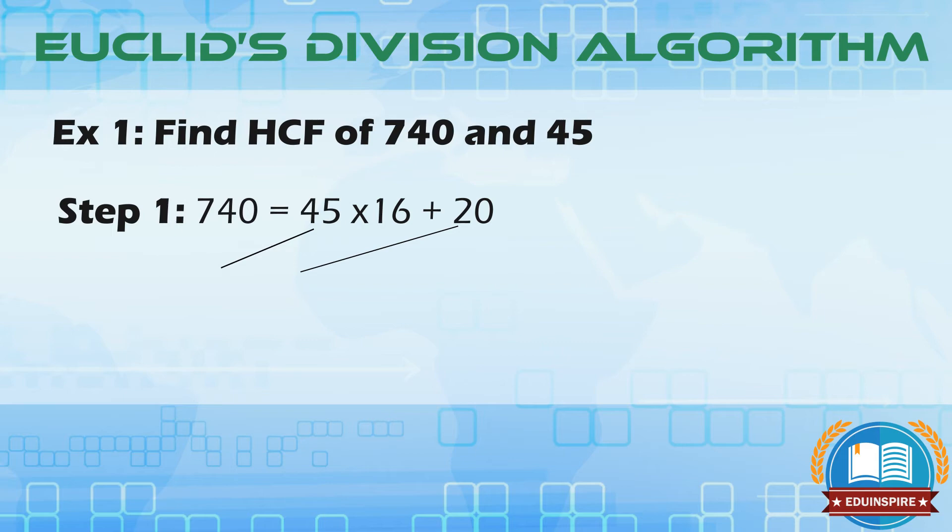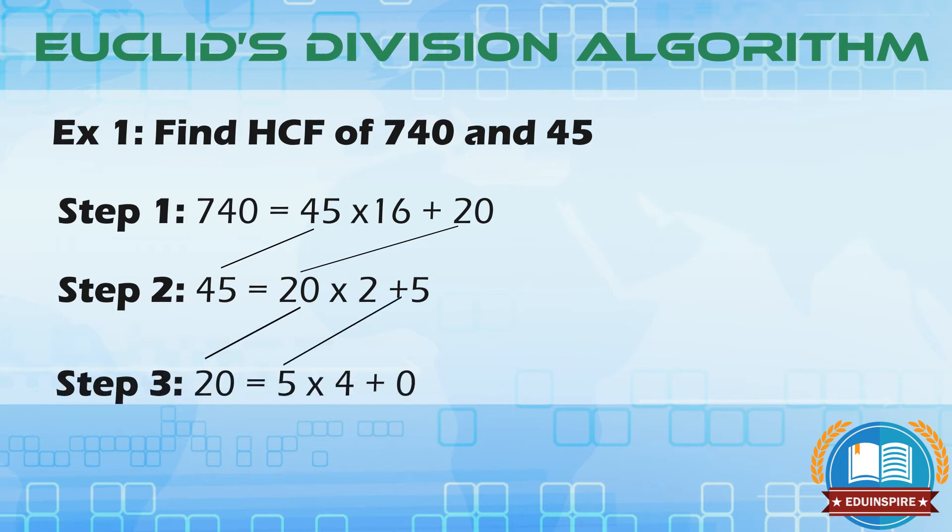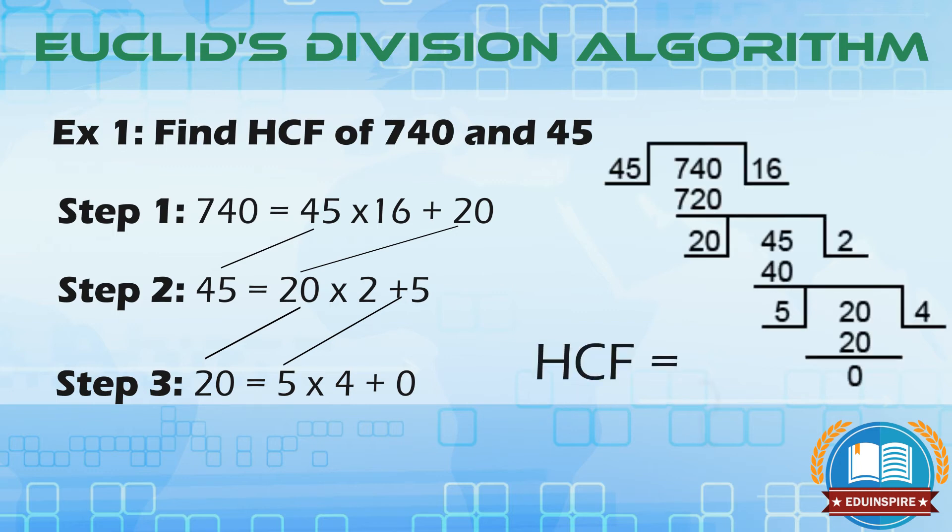As the remainder here is not zero, we proceed to the next step. Step 2 gives us 45 equals 20 into 2 plus 5. Again as the remainder is not zero, step 3 becomes 20 equals to 5 into 4 plus 0. As the remainder is 0, so the divisor in the last step becomes the HCF, that is 5.